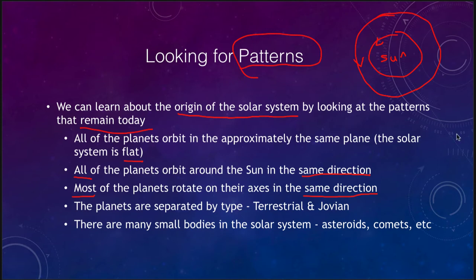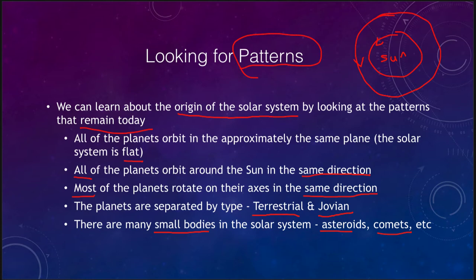We also note that the planets are separated by type. We have the terrestrial planets — the Earth-like planets — and the Jovian, or Jupiter-like, planets. We also note that there are a lot of small bodies in the solar system: asteroids and comets. We want to look at what that can tell us about the history of the solar system.